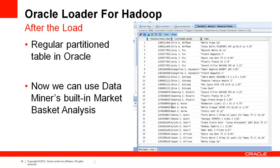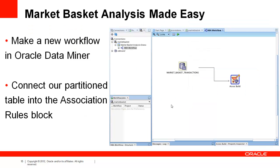Once the data is loaded, it shows up as a regular partitioned table in the database. Oracle Data Miner has a built-in market basket analysis widget which we can use to graphically define our workflow. To do this, we make a new workflow in Oracle Data Miner and connect our table to the association rules block — it's the one with the shopping cart. It's about as simple as market basket analysis can be.